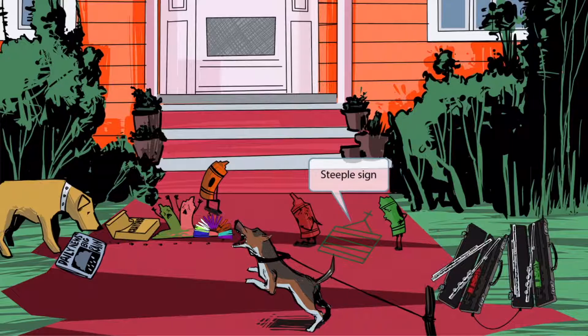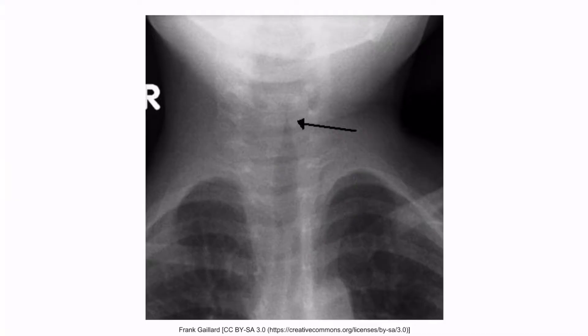Now look at these two crayons who are stuck outside, terrified of what's in store for them — either the dog or the rain will get them. In their fear, they've etched themselves a little church, hoping to reach the Crayola gods for help. They even included this little steeple. The steeple stands for the steeple sign created with tracheal narrowing. Going back to our tracheal narrowing radiograph, we can see that all of that inflammation has actually created that steeple sign.